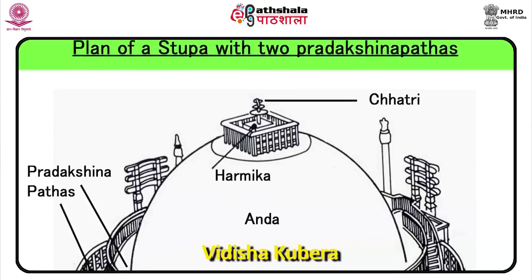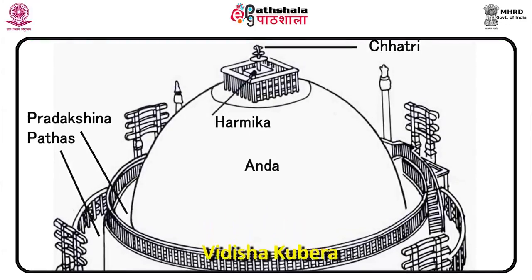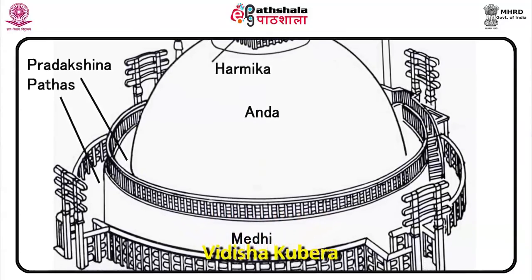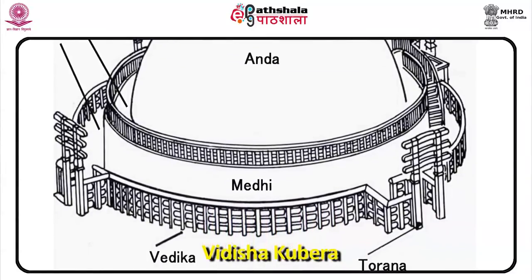Stupas were built over these relics. A stupa is a funerary structure of Buddhist religion which consists of a central hemispherical structure that cannot be entered, at the bottom center of which are buried the relics of Buddha or of a great Buddhist monk. This structure has an outer railing called Vedika and four gateways called Torana. Most of the sculptural depictions are found on the top of the Torana or on the Vedika, so that people circumambulating the central structure can look at them while doing so.